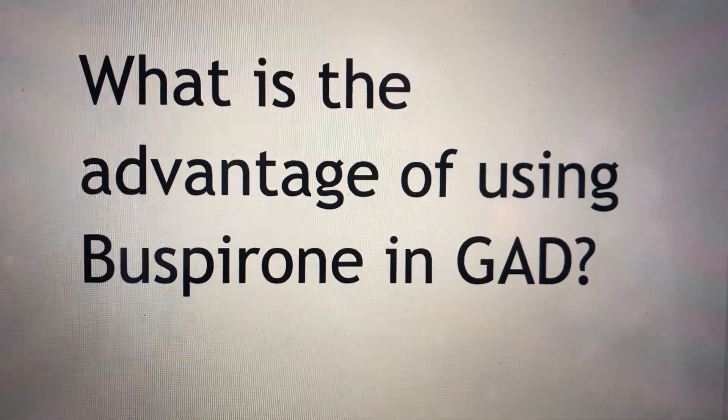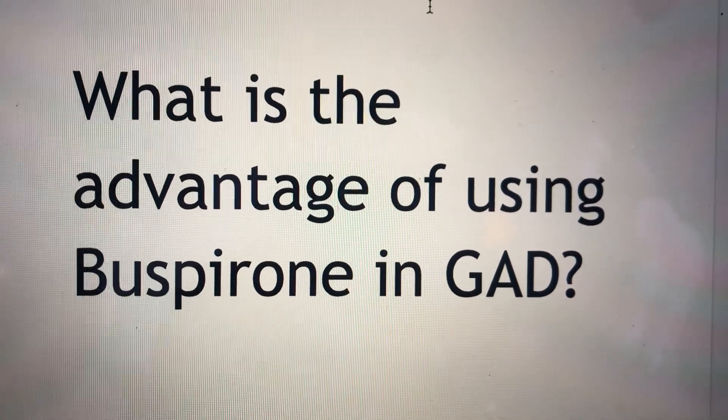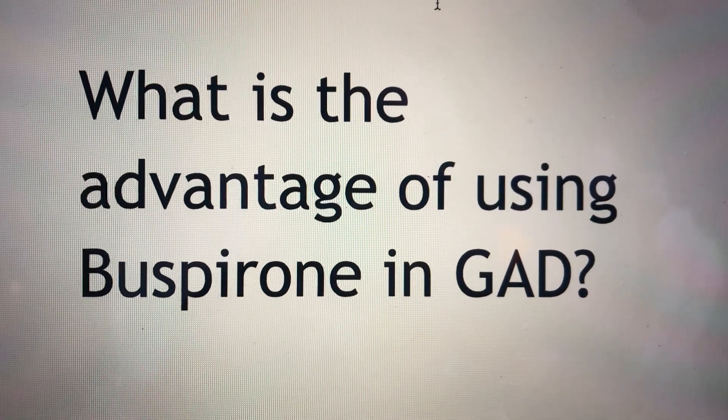The first line is cognitive behavioral therapy and SSRIs, SNRIs. Second line is this anxiolytic called Buspirone.